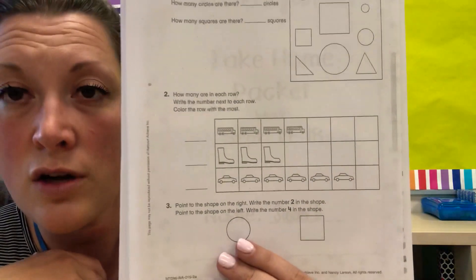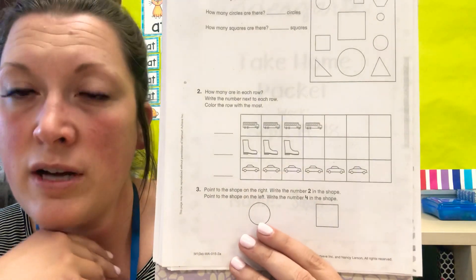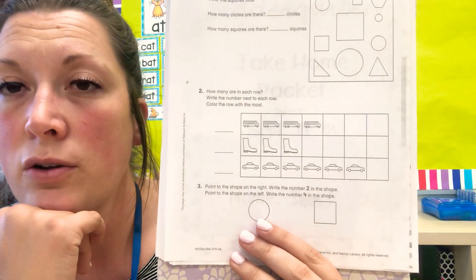Then circle the row with the most. So whichever one has the most you need to circle the row.